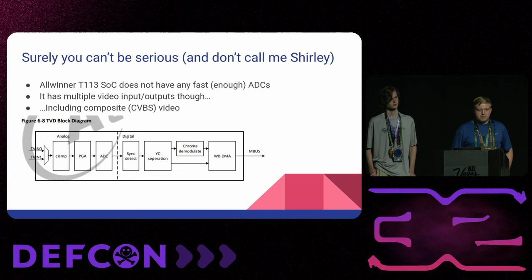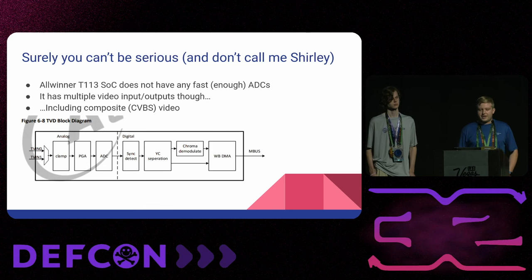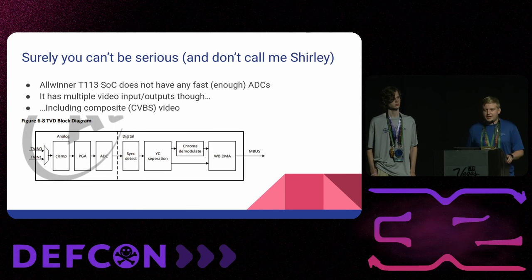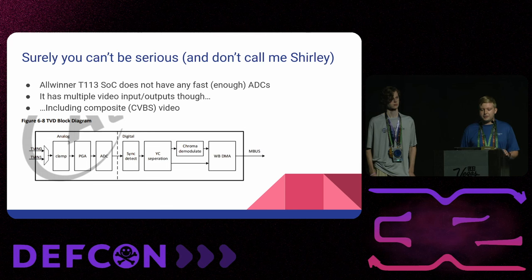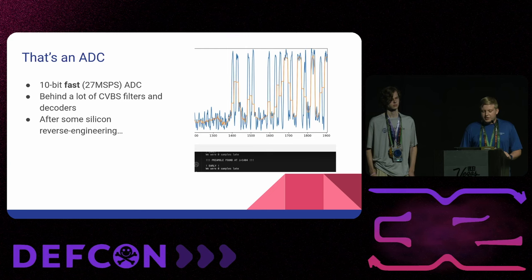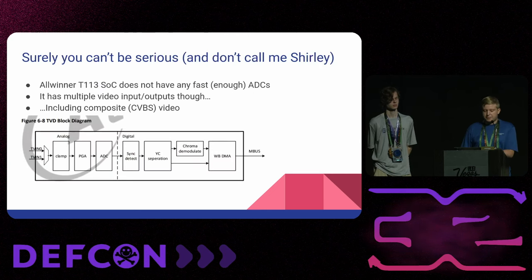The SoC we're using for the main Linux components of the badge is the AllWinner T113, which has dual Cortex-A7 cores. It doesn't have any fast ADCs on board — nothing fast enough to demodulate ADSB. However, it's intended for automotive video applications, so it has multiple video inputs and outputs. One supported input mode is composite video, and composite video requires at least a 27 mega-sample ADC. Sure enough, looking at the block diagram in the datasheet, next to the PGA there is an ADC block.